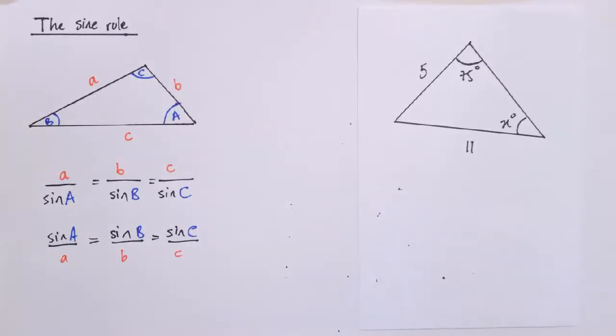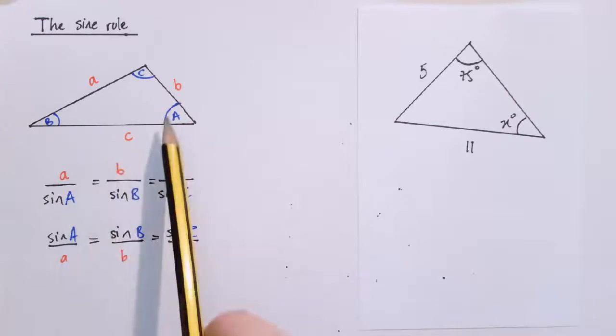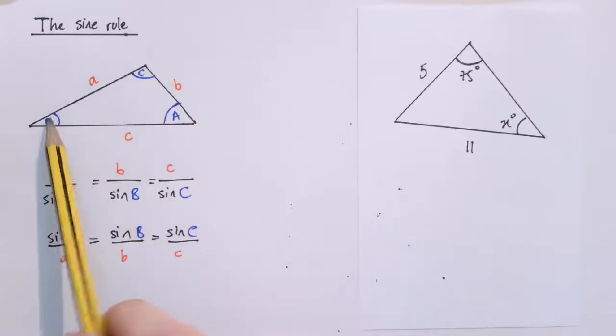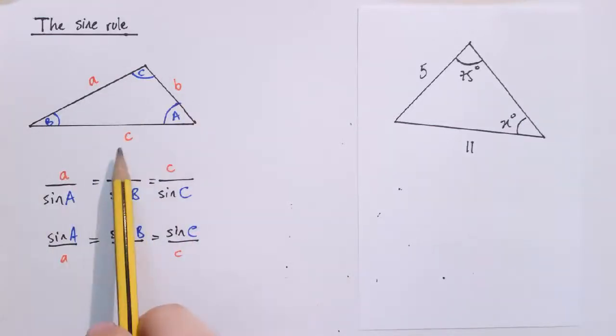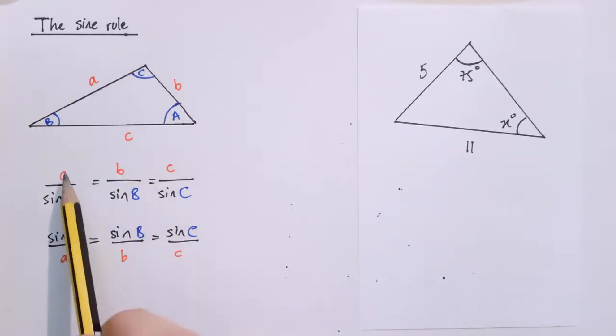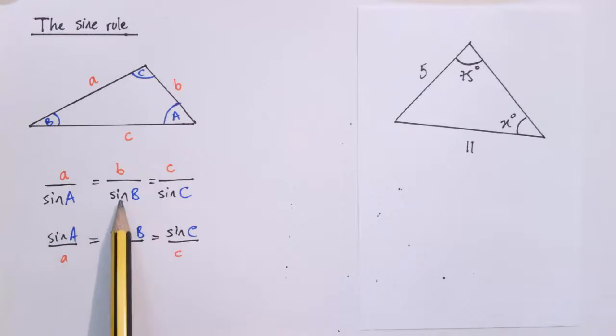So here's the sine rule. The setup's pretty much the same as for the cosine rule in terms of the triangle we're starting with. So I've got sides A, B, C and angles A, B, and C here. And all that really matters is that angle A is opposite side A, angle B opposite side B, angle C opposite side C. And the sine rule says that A divided by sine A equals B divided by sine B equals C divided by sine C.